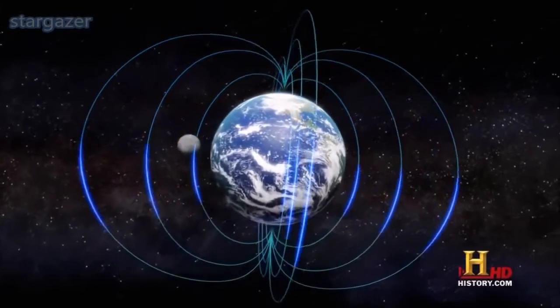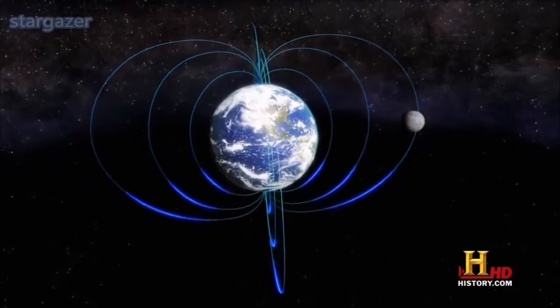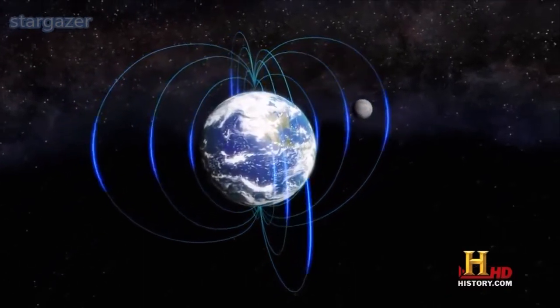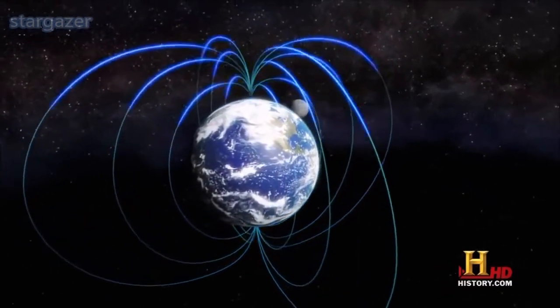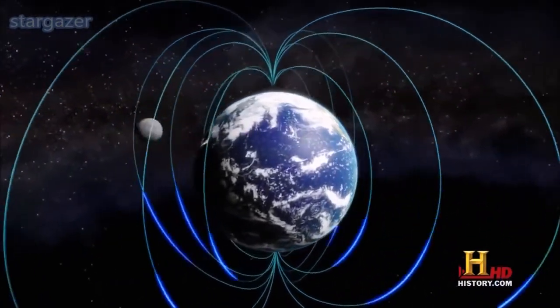Earth's magnetic field is not a stable, static thing. It's changed quite a lot over time. Like the wine in the glass, Earth's magnetic dynamo can change direction. The north and south pole can literally flip.